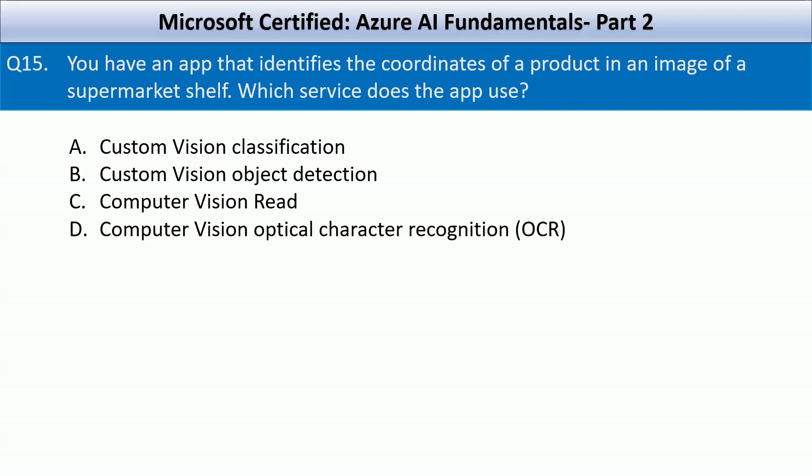You have an app that identifies the coordinates of a product in an image of a supermarket shelf. Which service does the app use? Your options are custom vision classification, custom vision object detection, computer vision read, or computer vision optical character recognition.